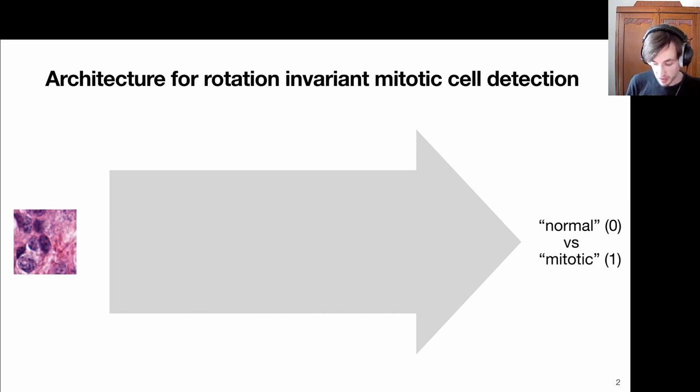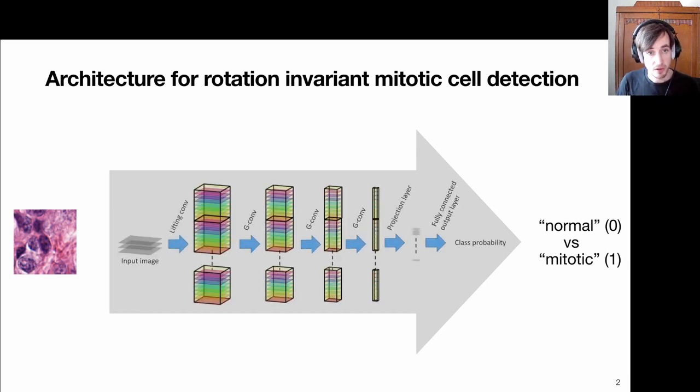Obviously, the prediction of the label should be invariant to rotations that we apply to this input patch, because it's still the same cell if I rotate the image. We're going to do that via group convolutional neural network, sticking to this recipe from the previous video.